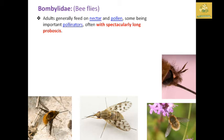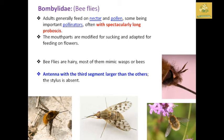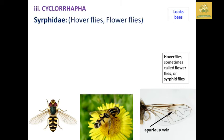Bombyliidae comprises bee flies. They generally feed on nectar and pollen and are important pollinators, often with a spectacular long proboscis. The mouthparts are modified for sucking and adapted for feeding on flowers. Bee flies are hairy and most mimic wasps or bees. The antenna has a third segment larger than the others; the stylus is absent in this group.